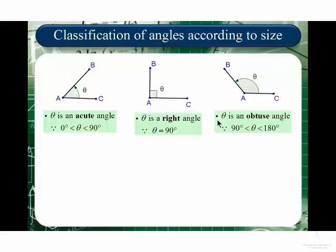The next type of angle, according to size, will be when the angle theta is obtuse. That means that the size of the angle lies between 90 degrees and 180 degrees, strictly between.